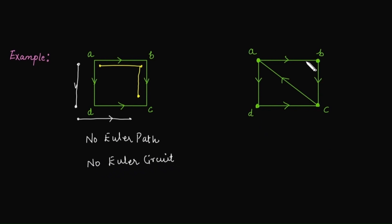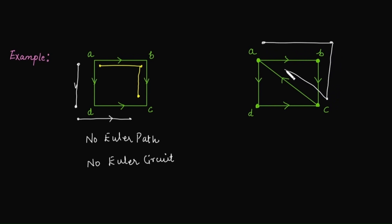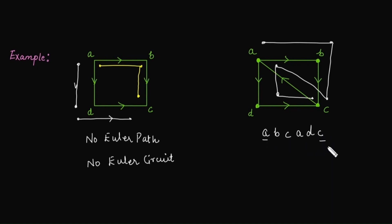Now, can you reconstruct this second graph without lifting your pen? In this case, yes. Start from vertex A, then move to B, then C, then A, D, C. The path is A → B → C → B → C → A → D → C, and the endpoints are different, which means this graph has an Euler path but not an Euler circuit.